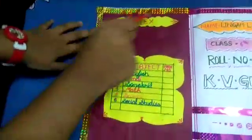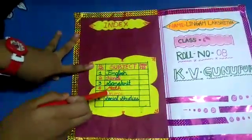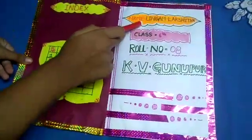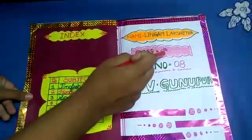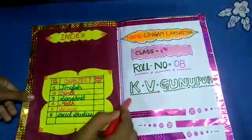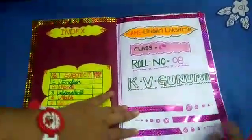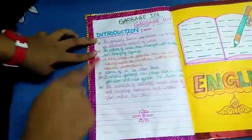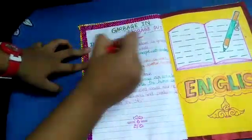I'm turning it — this is my index. I have six subjects: English, Hindi, Sanskrit, Math, Science, and Social Studies. This is my self-introduction: my name is Lingam Lakshita, class sixth, roll number eight, and I'm studying in Kendriya Vidyalaya Gunpur. This is the topic introduction page and my topic is 'Garbage In and Garbage Out' with introduction and some key points.